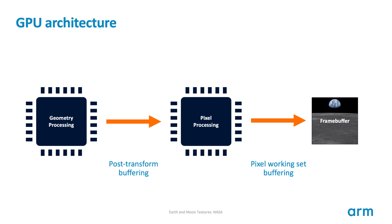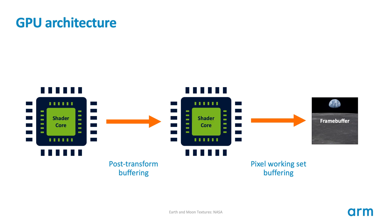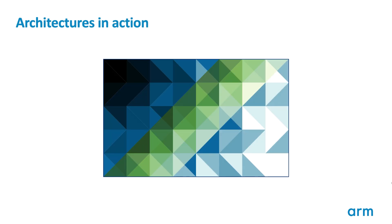Within each shader stage, we have the programmable core which executes shader programs. GPU shader cores have a very different design to a typical CPU, tuned for very data-parallel problem solving. To help visualize the behavior of different architectures, we are going to use a sample test scene consisting of two draw calls. The first is a full-screen mesh of triangles, shown in blue. The second is a transparent green strip, drawn diagonally on top with alpha blending enabled.